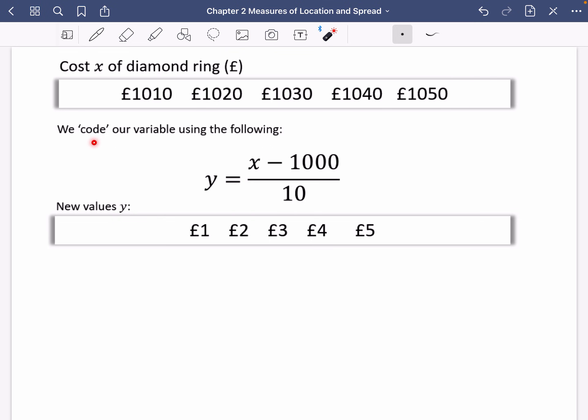So I've said we're going to code our variable using the following. So to get a new value y, you're going to subtract 1,000 from these and then divide it by 10. So you'd have 10, 20, 30, 40, and 50, and when you divide it by 10, you'd get 1, 2, 3, 4, and 5.